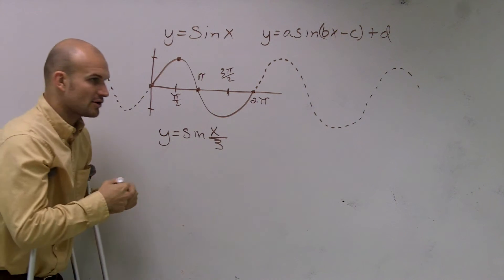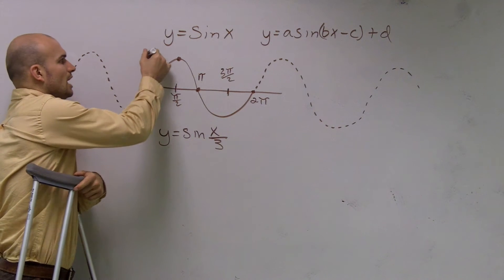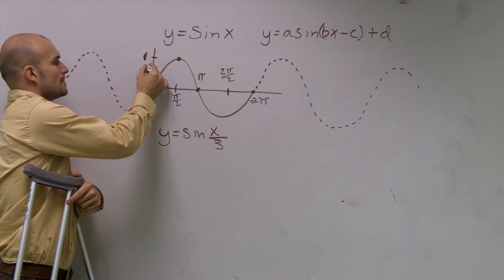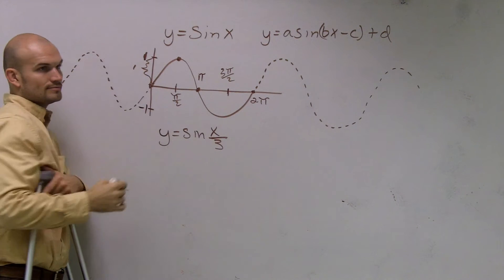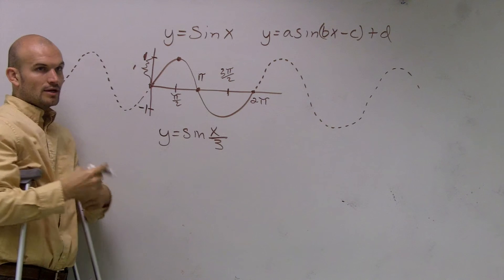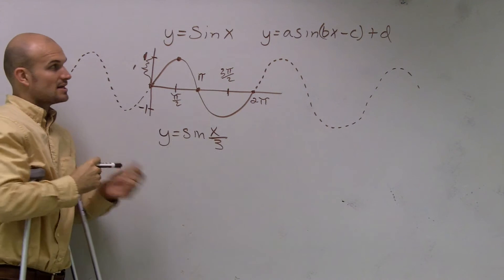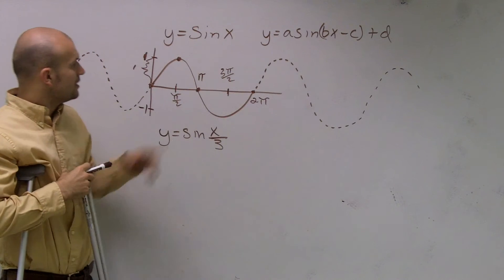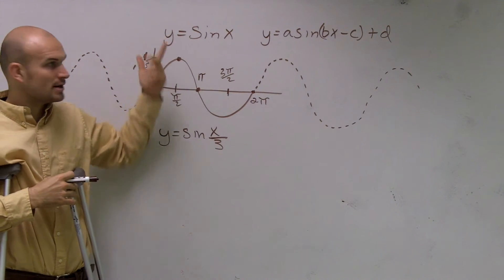A couple of things we want to remember about our graph. The height of the graph from the x-axis is 1. It goes up 1 and down 1, which we call our amplitude. That is how we determine what is our number in front of our function sine. In your regular function, you actually have 1, so that's why it's 1.